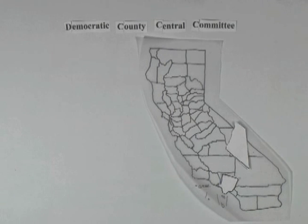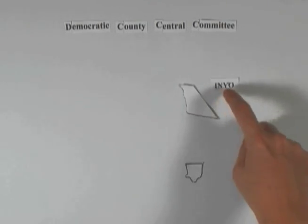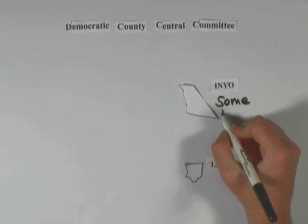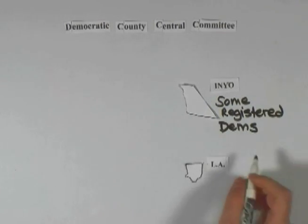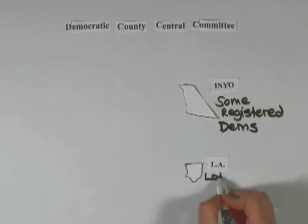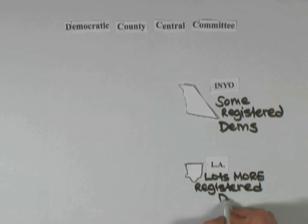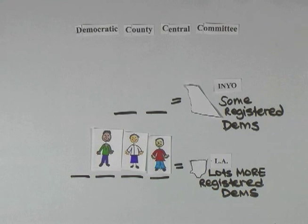Because they are separate organizations, not every member of a Democratic County Central Committee necessarily becomes a delegate to the state party. Instead, the state party gives each county party a number of delegate slots that the county party can fill in accordance with their own rules and bylaws. The number of delegate slots allocated to each county committee depends on the number of registered Democrats in the county. It's up to the county central committees to decide who they want to send as delegates.